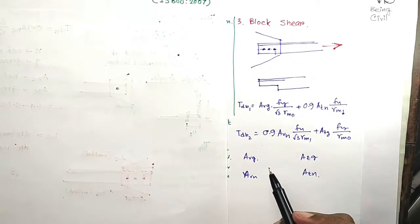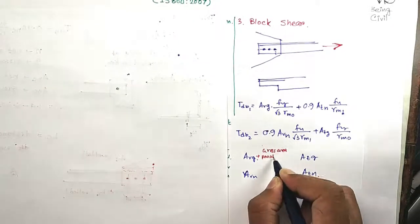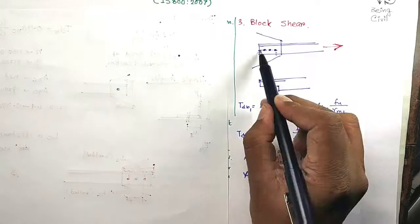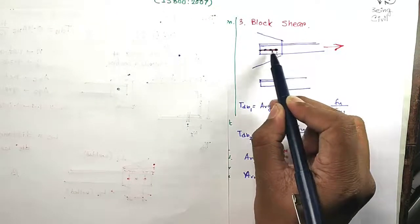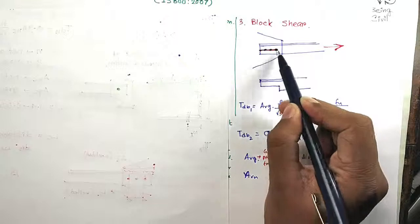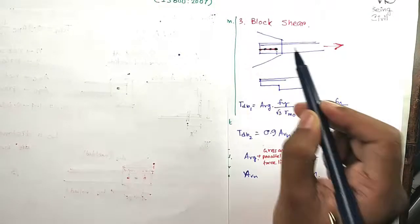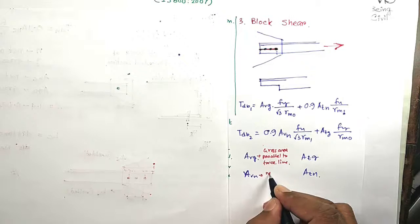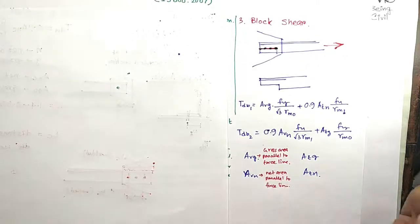So Avg is gross area parallel to force. As this line I have drawn, the gross area along this line is Avg. And if you subtract the area for the bolts from here, you will get Avn, which is net area parallel to force line.